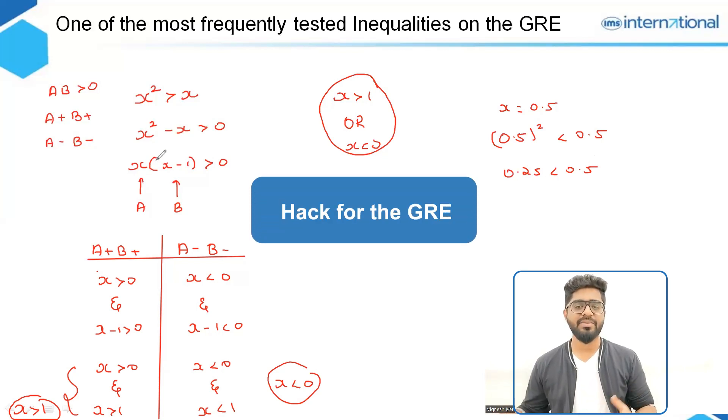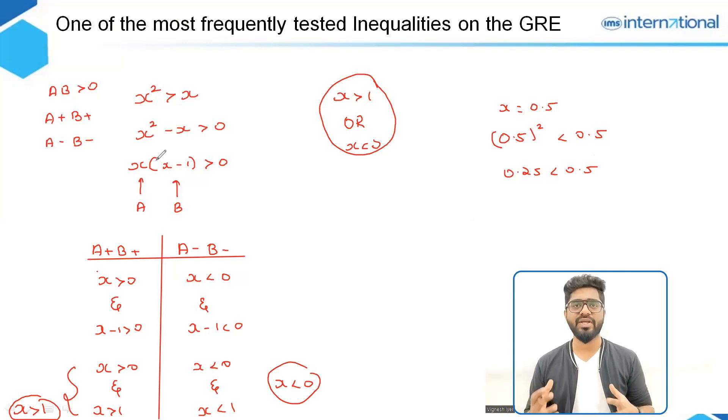So on the GRE exam, you do not need to solve this entirely and check for what values of X this is true. What you can do is, since this is one of the most frequently tested concepts, you can remember that X squared is greater than X when X is greater than 1 or when X is less than 0.